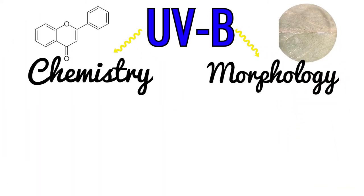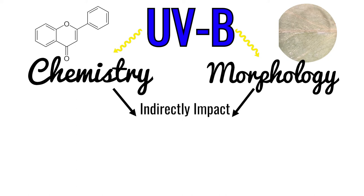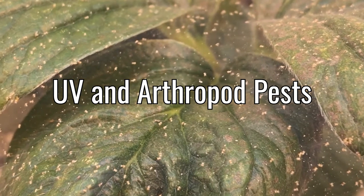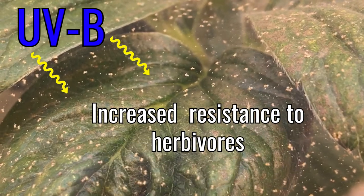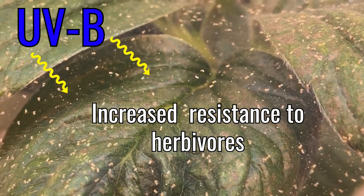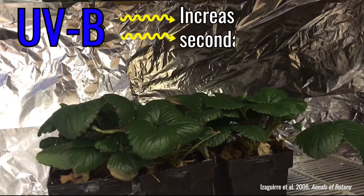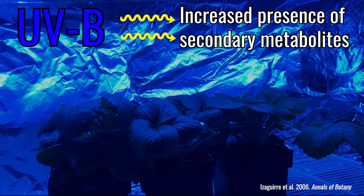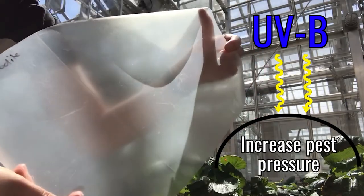These chemical and morphological responses to UV appear to have minimal impact on overall plant growth and yield, but could indirectly impact the health of herbivores and plant pathogens. It is not uncommon for plants grown under ambient UVB to show increased resistance to herbivores compared to plants grown without such exposure. This effect is likely due to the enhanced presence of secondary metabolites used for plant defense when exposed to UV. In this case, UVB blocking plastics may increase pest pressure.